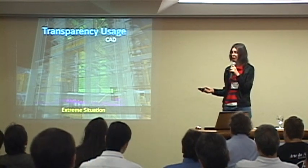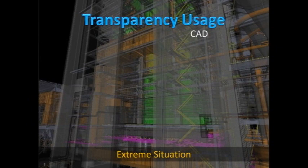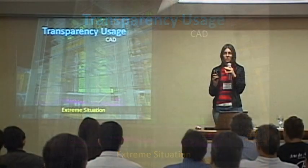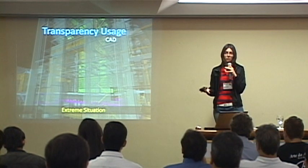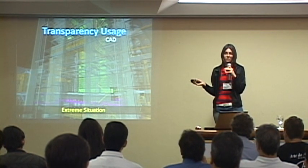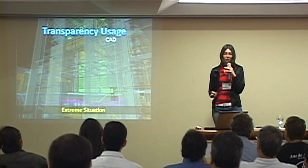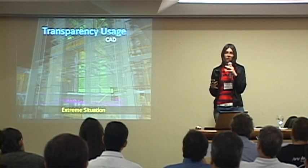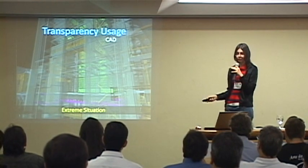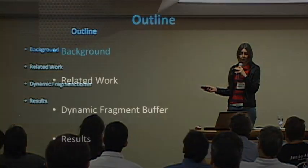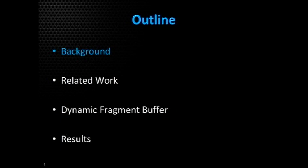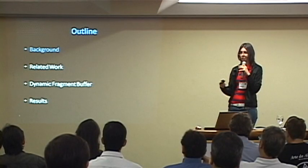But what we are really interested in rendering is massive transparency — a large scene where everything is transparent and we can choose the transparency degree of objects to denote relationships among them. This is the extreme situation because we have lots of transparency layers and lots of pixels with lots of transparency layers. I will now talk about the problem of transparency, related work, methods, and results.